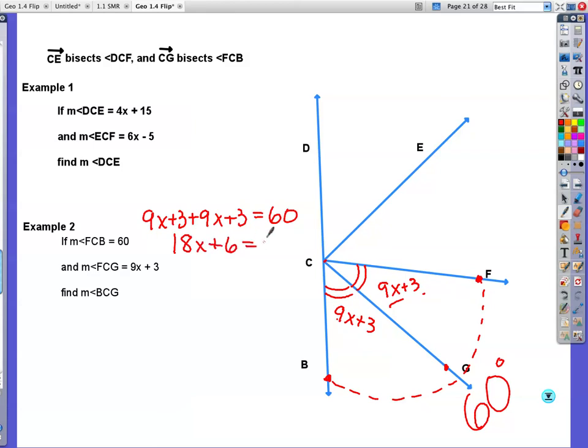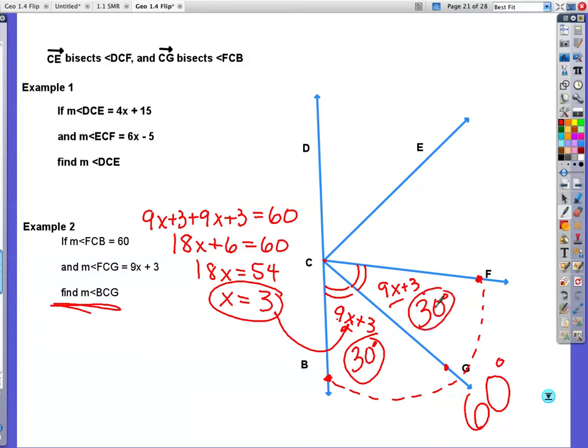Combine like terms. Subtract 6 from both sides. Divide both sides by 18. 54 divided by 18 is 3. So my X value is 3. The question is not find X. It's find the measure of B, C, G. So if I put 3 in for X, I get 27. 27 plus 3 is 30. Let's double check. Is this the same thing? It would be the same thing. Now is 30 plus 30, 60? Yep, we're good. So that's okay.